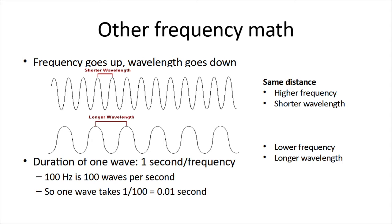Some other frequency math. As the frequency goes up, the wavelength goes down. You see the diagram. In a given amount of time, if we're putting through more waves, there's less distance between them. So, for the same distance, for the higher frequency, we get a shorter wavelength. But for a lower frequency, we get a longer wavelength.